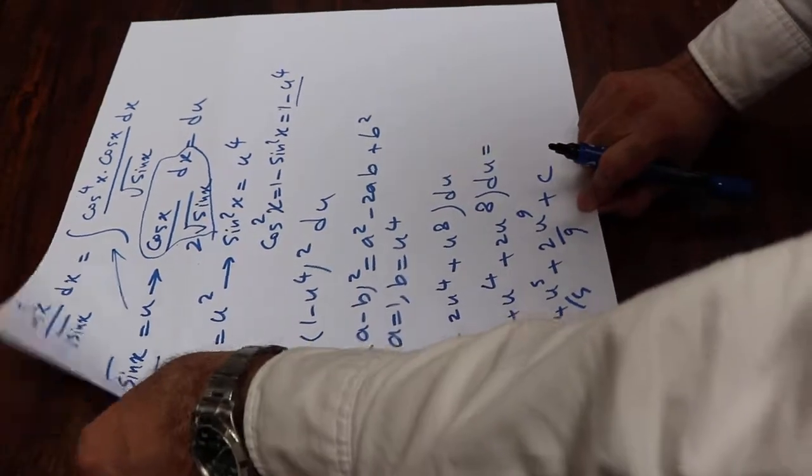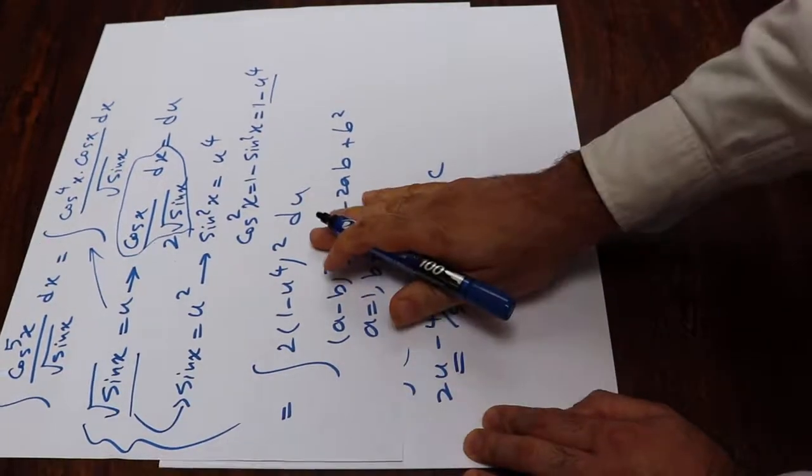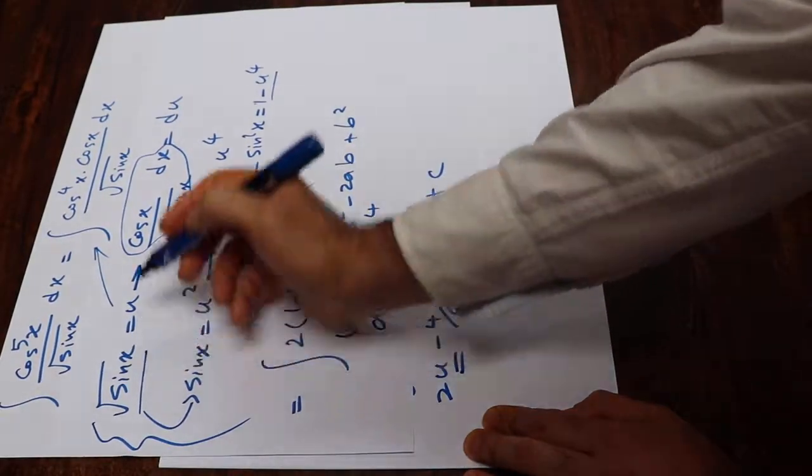So all you need to do here is to just substitute this parameter u with the definition of u, which was square root of sine x. So therefore,